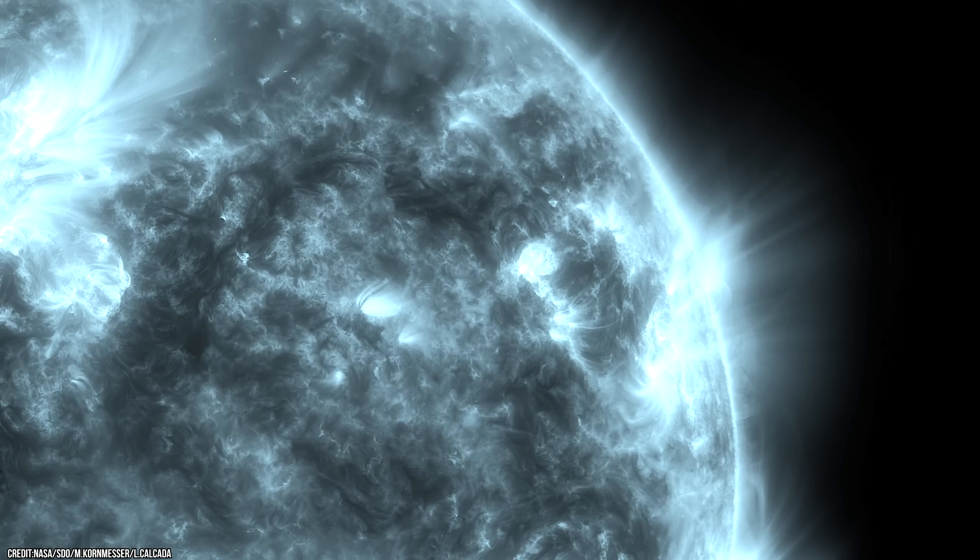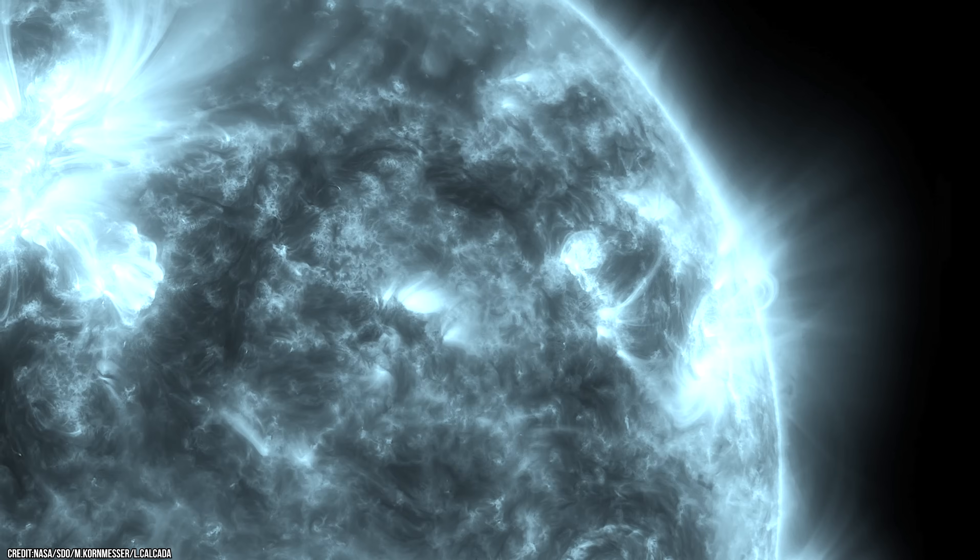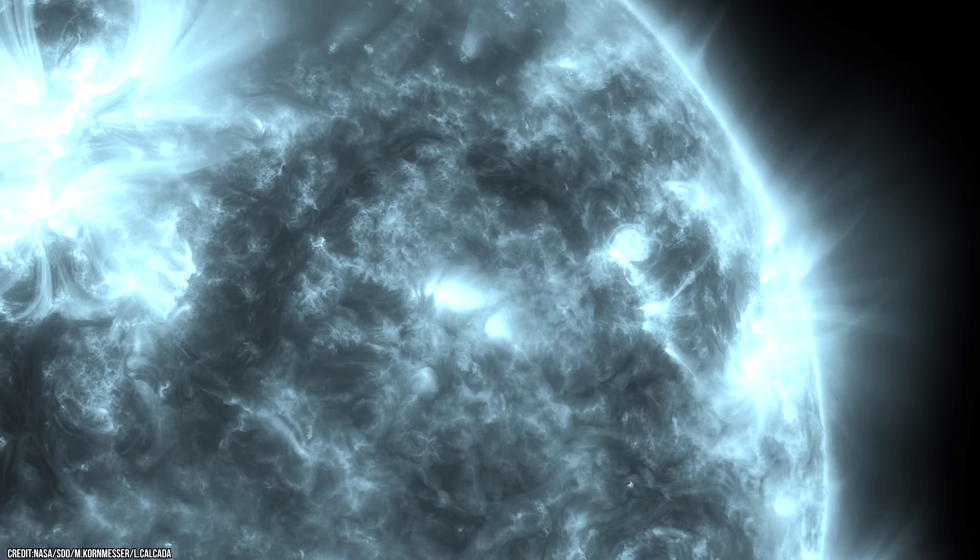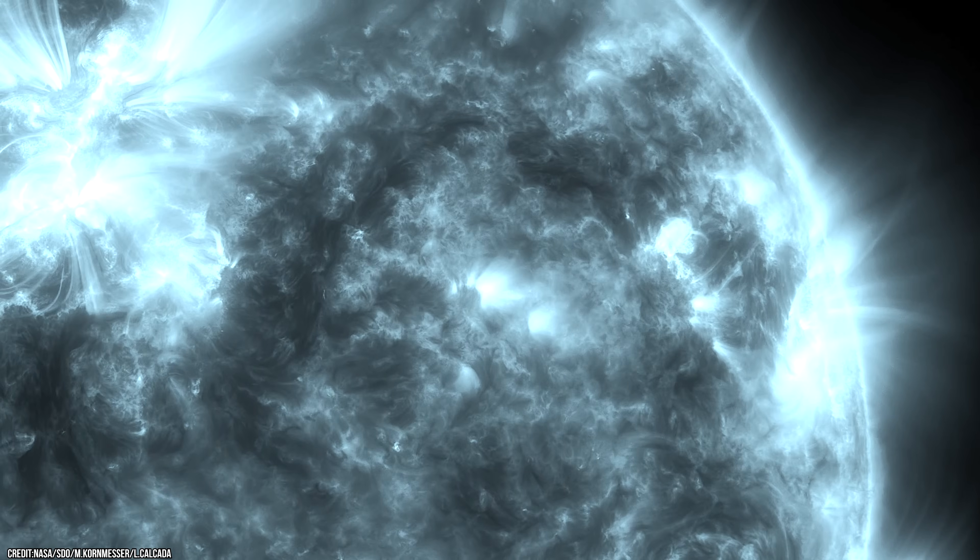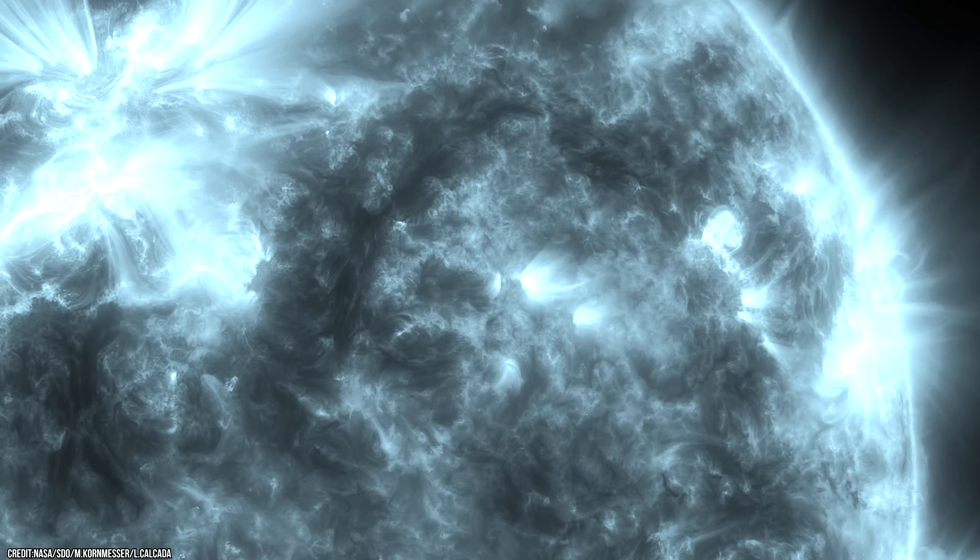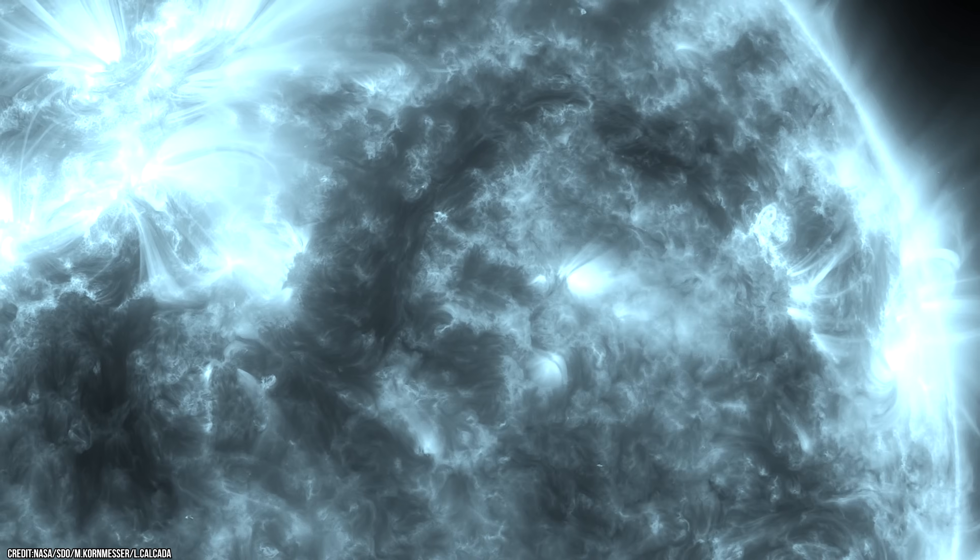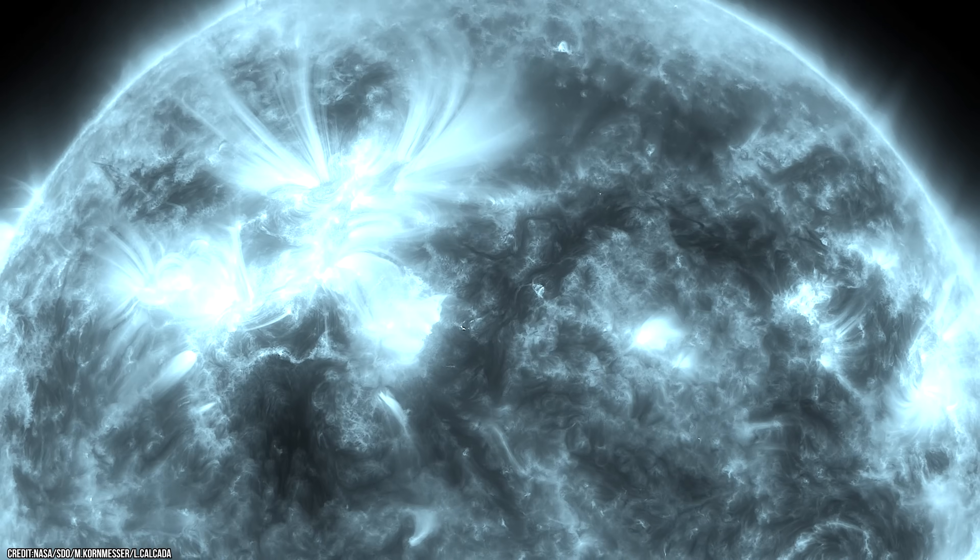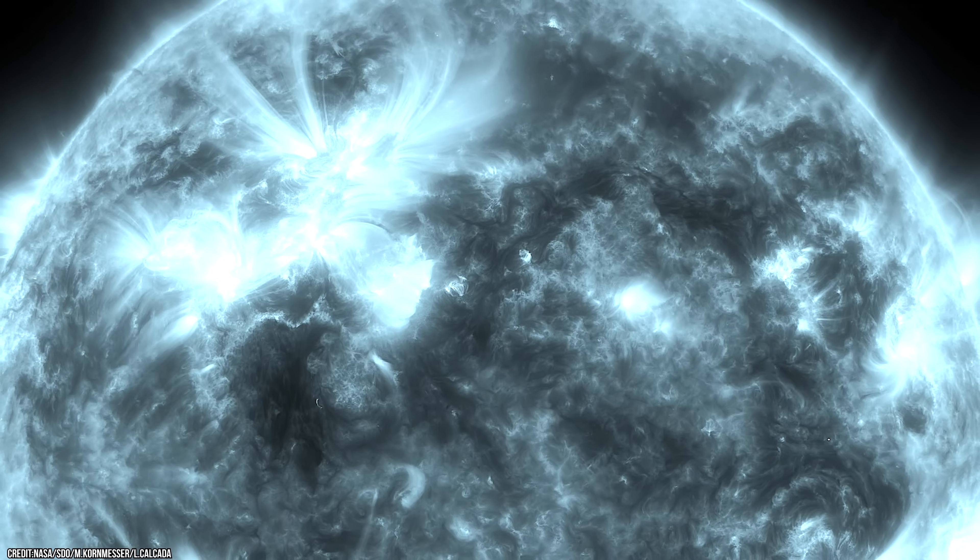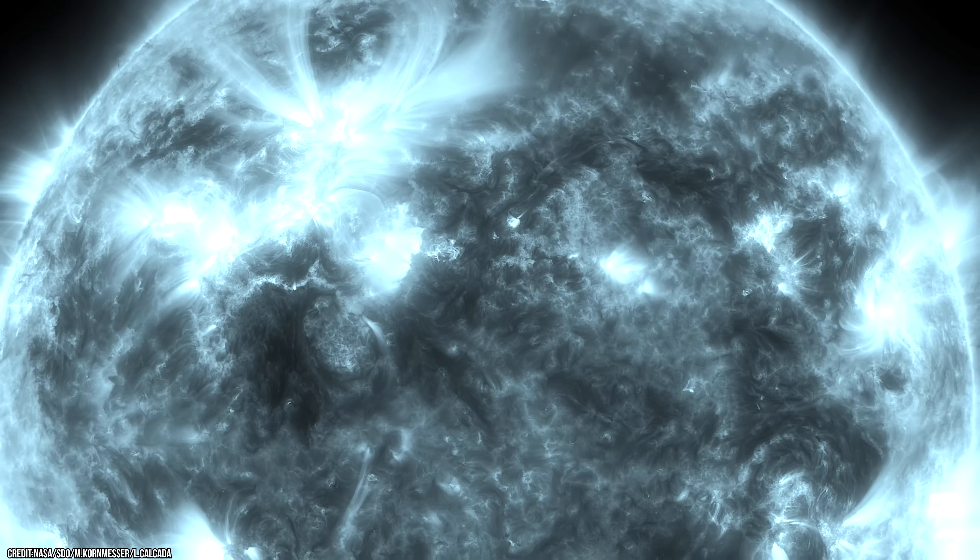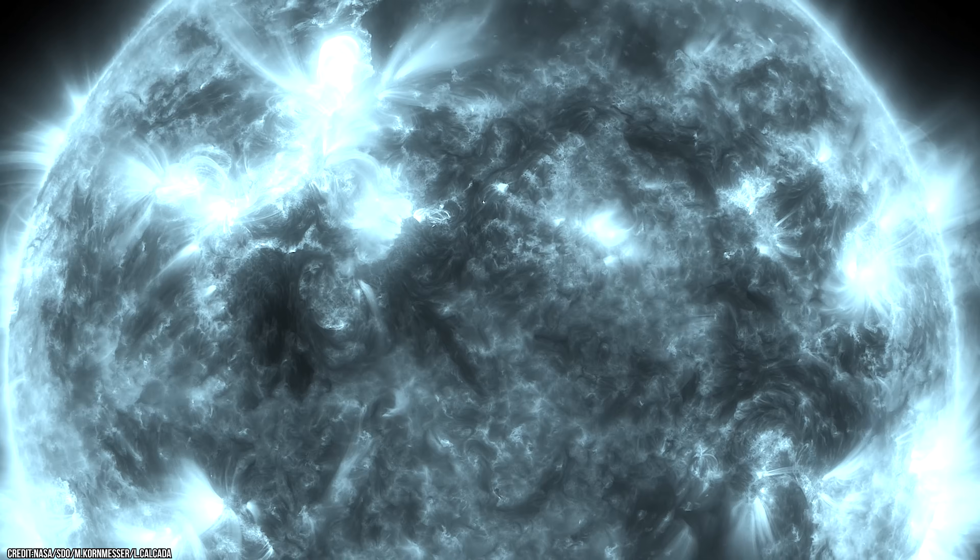The first stars to ignite in the universe were probably enormous objects, made almost solely of hydrogen and helium, the elements that formed as a direct result of the Big Bang. They would have contained none of the heavier elements like carbon, nitrogen, oxygen and iron that are found in stars shining today.